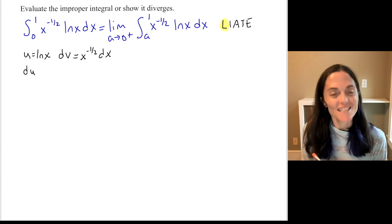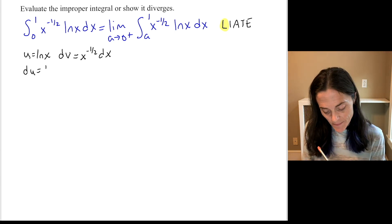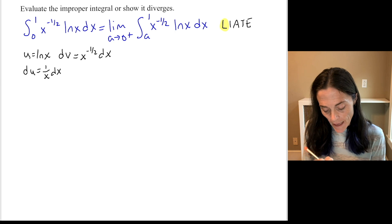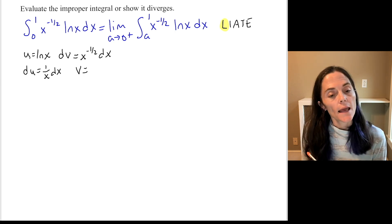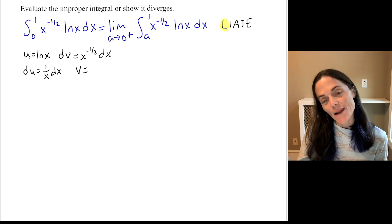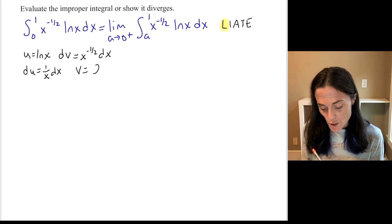And now we differentiate du is 1 over x dx. And here we integrate. And so this is power rule. We add a power, divide by the higher power. This will be 2x to the 1 half power.